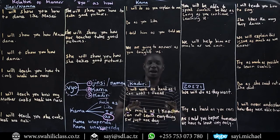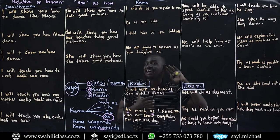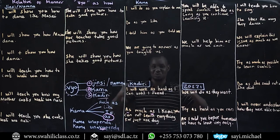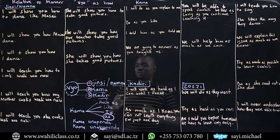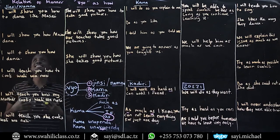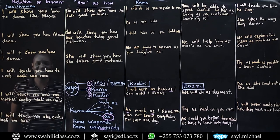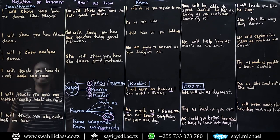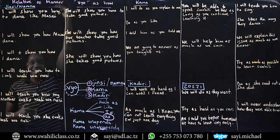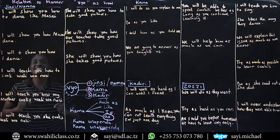Today we are learning how to say — leo tunajifunza jinsi ya kusema. We'll learn in detail about how to say. Look at this sentence: I will show you how to dance like Maasai. Have you seen the Maasai dance? They jump starting low, then higher and higher. So I will show you how to dance like Maasai.